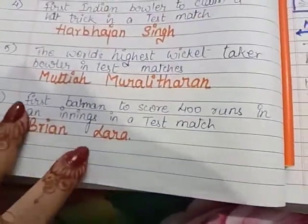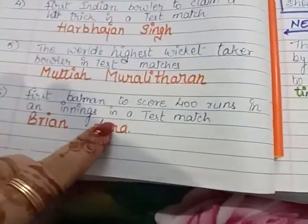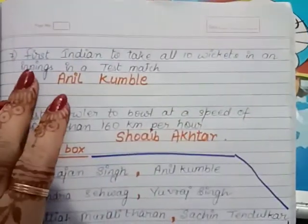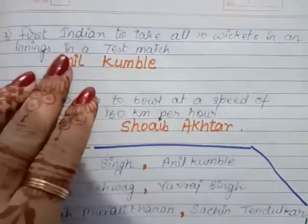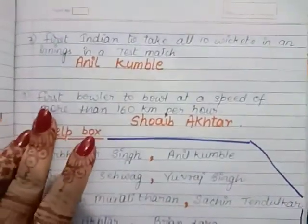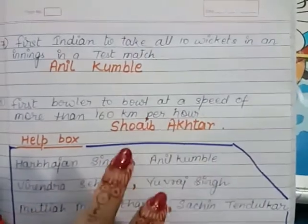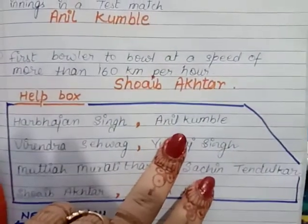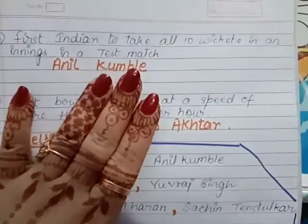Continuing the recap — First Indian to take all 10 wickets in an innings in a Test match: Anil Kumble. First bowler to bowl at a speed of more than 160 km per hour: Shoaib Akhtar. There is a help box with all the cricketers' names written; you have to choose the correct name and write it in front of each question.